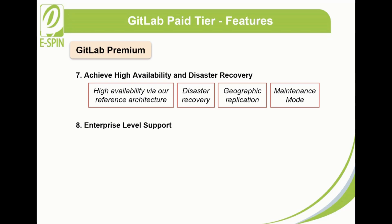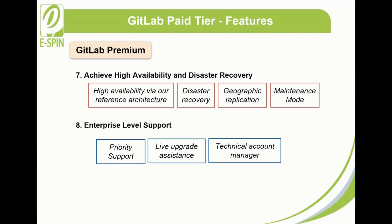8. Enterprise-level support in GitLab includes priority support, live upgrade assistance, and a technical and account manager. Priority support minimizes outages and downtime with a 4-hour response time for regular business support and 24/7 uptime support with a guaranteed 30-minute response time. Live upgrade assistance lets you schedule and upgrade time with GitLab, who will join a live screen share to help you through the process. Technical account manager helps guide, plan, and shape the deployment and implementation of GitLab — available to Premium customers spending $50,000 per year or more on their license.